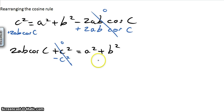But now we're imbalanced, so we need to take c squared from the right hand side as well. So we end up with 2ab cosine c is a squared plus b squared minus c squared.